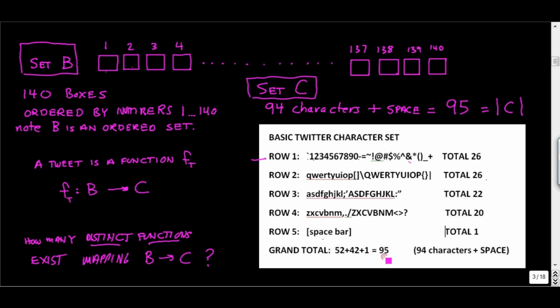Tweets have an idiosyncrasy: the space bar cannot appear in box 1. That is, Twitter doesn't allow you to have a space at the beginning of your tweet. But otherwise you can have a space anywhere else in the tweet. You can type any of the 94 other characters or a space bar in any other box. So a tweet is a function mapping the set of boxes to the set of characters.